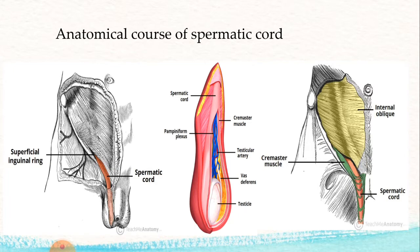The spermatic cord refers to a collection of vessels, nerves, and ducts that run to and from the testes, surrounded by fascia that forms a cord-like structure. The spermatic cord begins in the inferior abdominal wall and ends in the scrotum. It is formed at the opening of the inguinal canal, passes through the inguinal canal entering the scrotum via the superficial inguinal ring, and attaches to the posterior border of the testes.